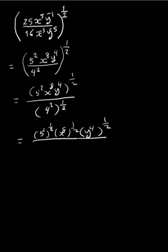y to the power 4 to the power 1 half equals y to the power 4 times 1 half. Similarly, 4 to the power 2 to the power 1 half equals 4 to the power 2 times 1 half — 2 times 1 half is 1, so 4 to the power 1 is 4. And 5 squared to the power 1 half equals 5 to the power 2 times 1 half, which is 5 to the power 1, giving 5.